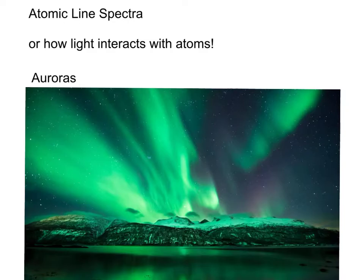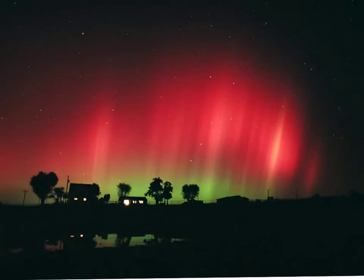To illustrate that second point, here's an image of the aurora particularly picking out two very distinct but common colours — a green and a red — and both of these colours are being given off by oxygen, because oxygen has very specific energy levels and emits these very specific colours. By the end of the session we'll be able to explain why that occurs.